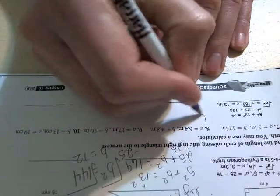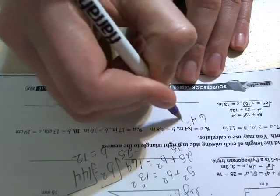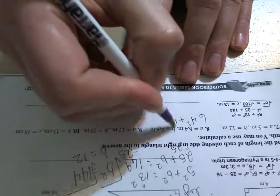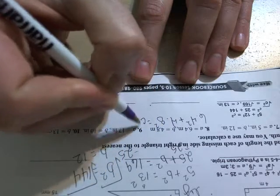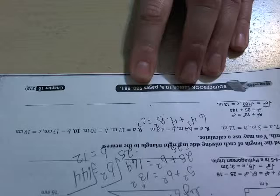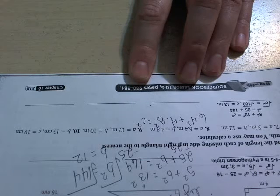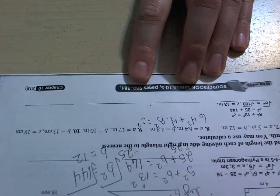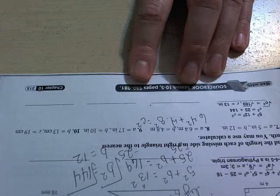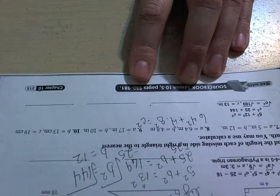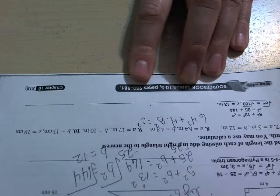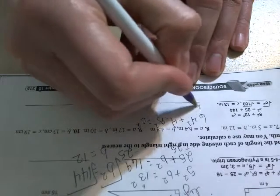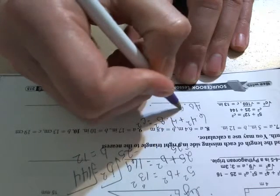Again, A squared, 6.4 squared, plus B squared, 4.8 squared, equals my hypotenuse squared. This one's nice because I don't have to treat this like solving an equation. I will have to do the square root to take care of C squared, but I'm not going to have to move things to the other side. Notice the directions say use a calculator because they're throwing a lot of decimals at you, which is fine. 6.4 squared changes into 40.96.